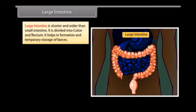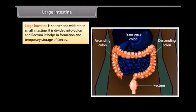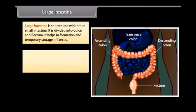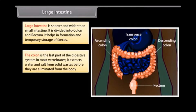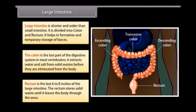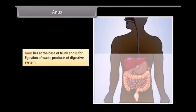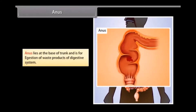Large intestine is shorter and wider than the small intestine. It is divided into colon and rectum. It helps in formation and temporary storage of feces. The colon extracts water and salt from solid wastes before they are eliminated. The rectum is the last 6 to 8 inches of the large intestine and stores solid waste until it leaves the body through the anus.